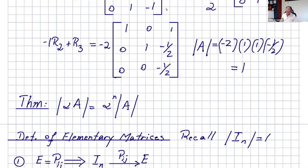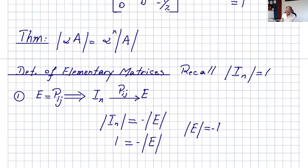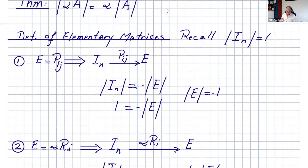I also present this theorem: the determinant of alpha times A equals alpha to the power of n times the determinant of A. This makes sense because you are multiplying every single row in the matrix by alpha, which is n rows total. Remember this theorem and try to verify the proof. In the next video I'm going to talk about the determinant of elementary matrices. Please watch this video a couple of times, try to finish that proof, and I'll see you in the next video. Thank you and have a great day.